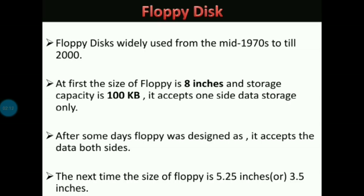Coming to floppy disk — what is floppy disk? The duration of floppy disk is 1970 to 2000. At that time, the size of floppy disk was only 8 inches and the storage capacity was only 100 KB — very less storage capacity, because it accepted only one-side data storage.